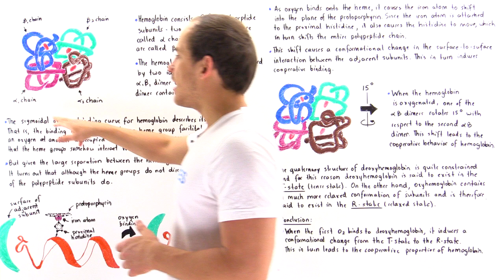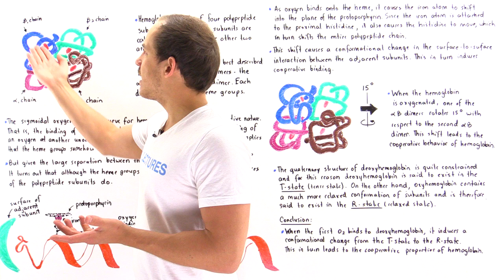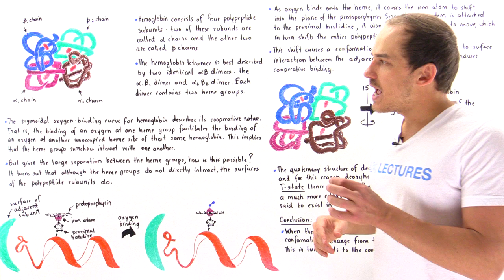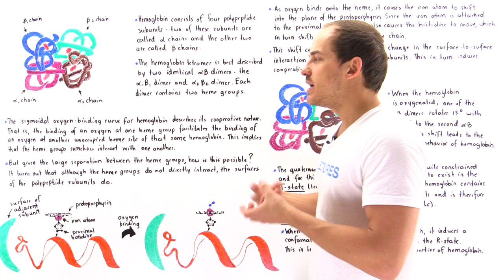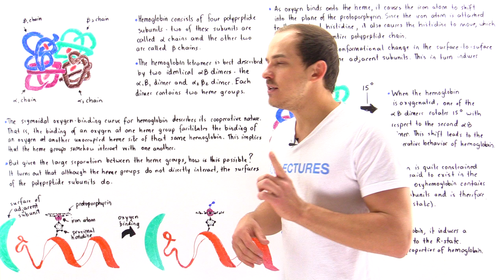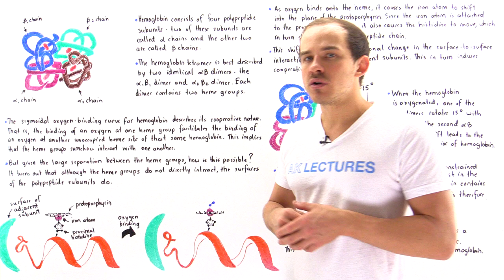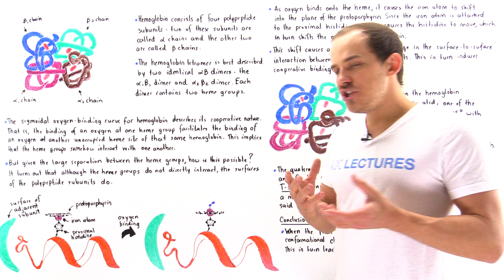Hemoglobin consists of four individual polypeptide chains: the alpha-1 and alpha-2 chains, which are identical to one another, and the beta-1 and beta-2 chains, which are also identical to one another. In each polypeptide chain we have heme groups — these contain the iron and the protoporphyrin responsible for binding diatomic oxygen. Because one heme group binds one O2 molecule, one hemoglobin molecule can bind a maximum of four diatomic oxygen molecules.